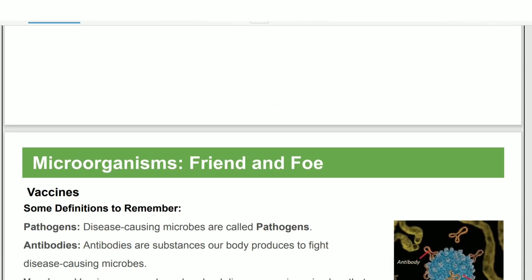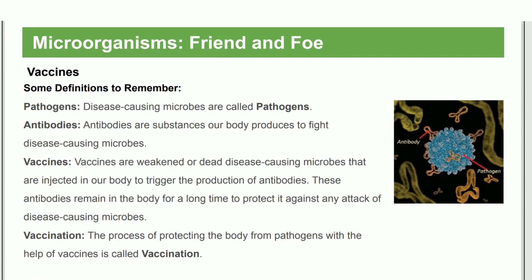Vaccines are made of weakened or dead disease-causing microbes that are injected into our body. When injected, these microbes cause our body to produce antibodies — substances our body produces to fight disease-causing microbes. These antibodies then protect us from future infection.